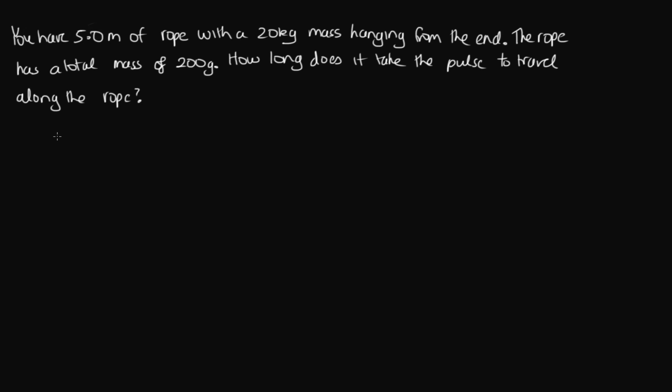Okay, so to answer this one, we're going to need to use our equation that the speed is equal to the square root of the tension over the mass per unit length. Now in this case, the mass per unit length is just the mass divided by the length. We're told the mass is 200 grams. So in SI units, that's 0.200 kilograms, and the length is 5 meters. So the mass per unit length is 0.040 kilograms per meter.